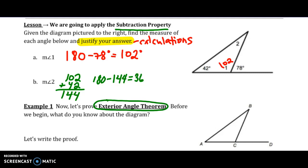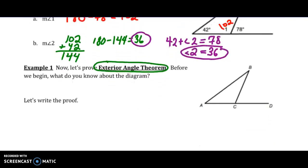Or I know 42 plus angle 2 has to be 78, so angle 2 has to be 36. Either way we get the same answer regardless.